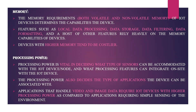Next is processing power. Processing power is one of the vital considerations to decide what type of sensors can be used in an IoT solution and what processing features can be integrated. Processing power also decides which type of application the IoT device is associated with. If the application handles video or image data, it requires IoT devices with high processing power, since high-quality images and videos need to be produced. Based on the application, the processing power is decided.